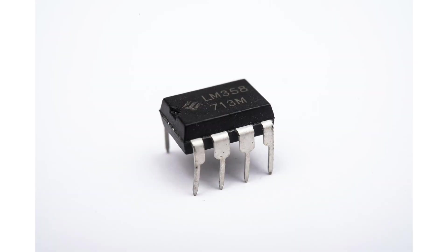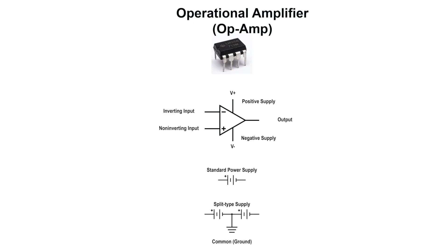Operational amplifiers are voltage amplifying devices designed to be used with components like capacitors and resistors, between its in/out terminals. They are often used in conjunction with signals from sensors connected in control circuits. The example shows the symbol for an op-amp.